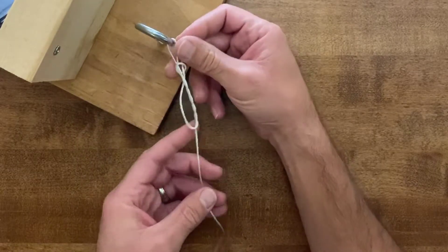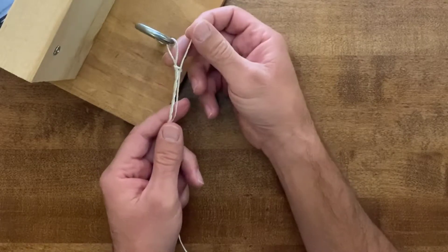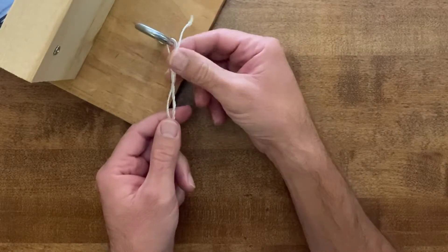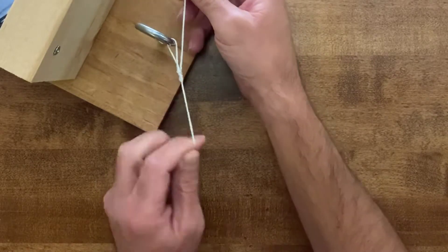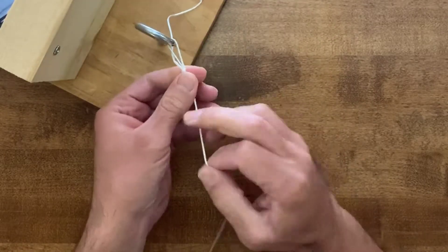Then we're going to pull that knot down. On your fishing line you'll want to moisten the line at this point because of the friction that it's going to undergo when you tighten it up. We will tighten that line back on itself, back on the knot.